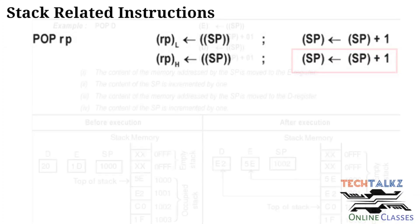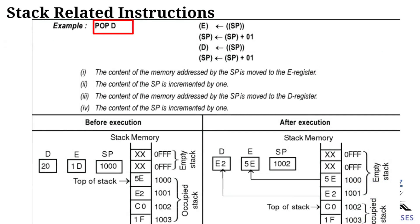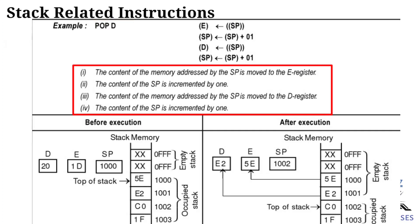Example for POP D: The content of memory addressed by the stack pointer is moved to the E register (low-order register). Then the stack pointer is incremented by 1. The content of memory addressed by the new stack pointer is moved to the D register (high-order register). After that, the stack pointer is incremented by 1 again.